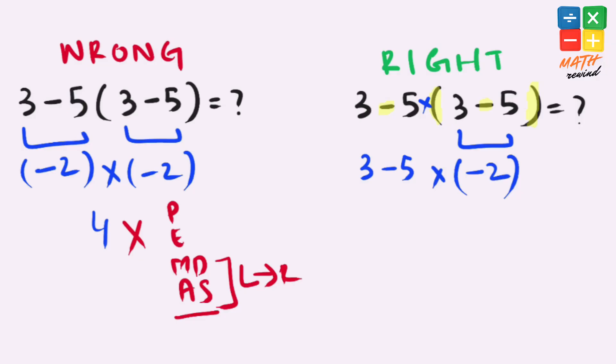Now if you notice, we have multiplication and we have subtraction present in this expression, and according to the rules, multiplication has higher priority. So we solve this multiplication first.